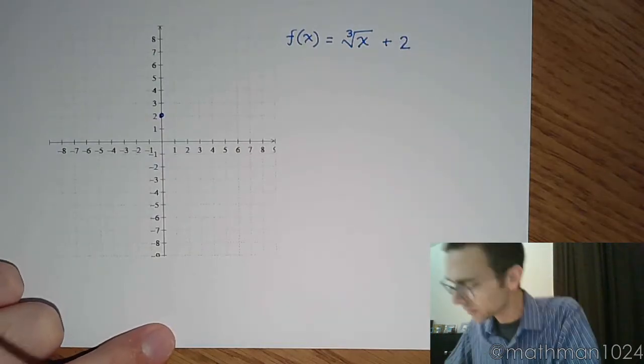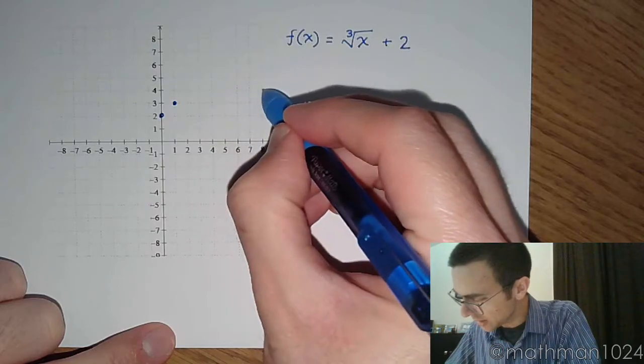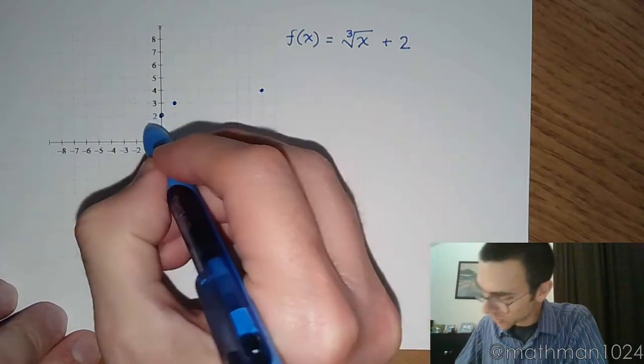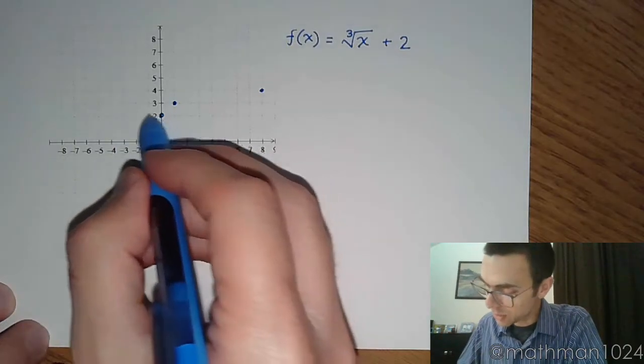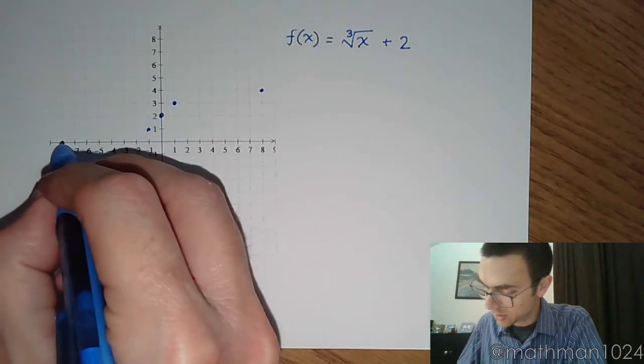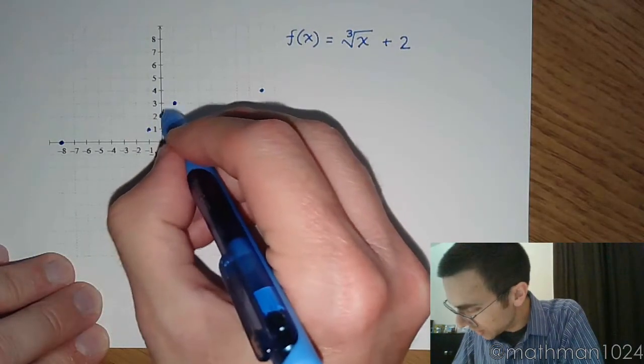And knowing my key points, the cube root of 1 is 1, the cube root of 8 is 2. Come back over here, the cube root of negative 1 is negative 1, and the cube root of negative 8 is going to be down here at negative 2. Here is my shape.